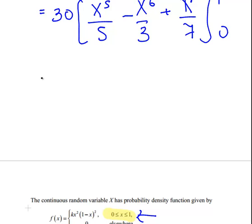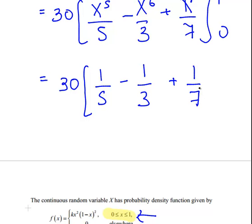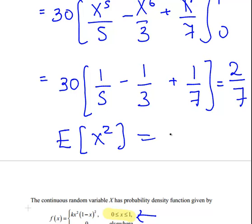That is equal to 30 times, when we evaluate to 0 it just cancels out, so we're just going to evaluate to 1: 1 fifth minus 1 third plus 1 seventh. The expected value in that case is 2 over 7. The expected value of x squared equals 2 over 7.